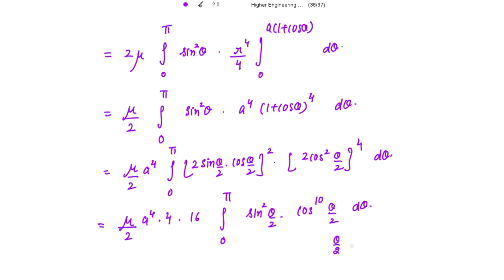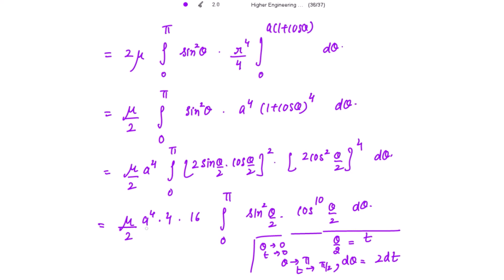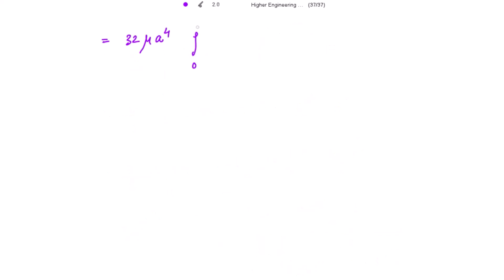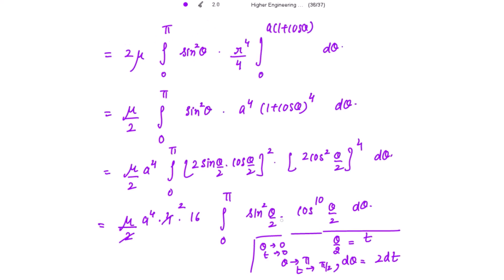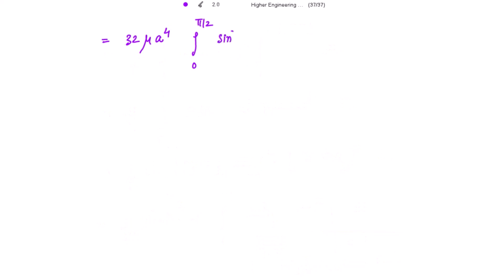To remove the fraction theta over 2, let t equal theta over 2, so d theta equals 2 dt. When theta tends to 0, t tends to 0; when theta tends to pi, t tends to pi over 2. The constants 2 and 16 multiply to give 32 mu A to the power 4, with limits from 0 to pi over 2 of sine squared t times cos to the power 10 t times 2 dt.